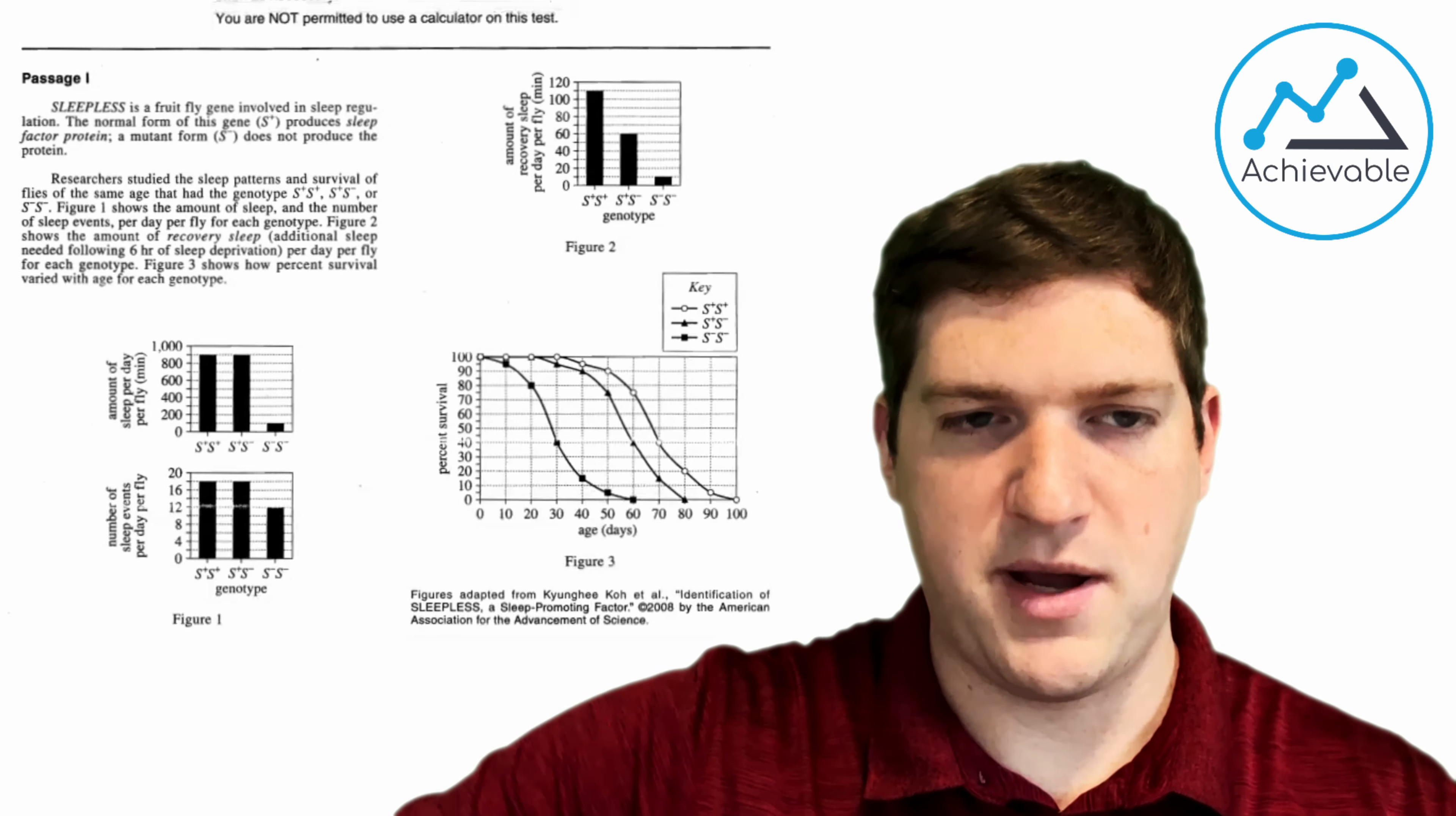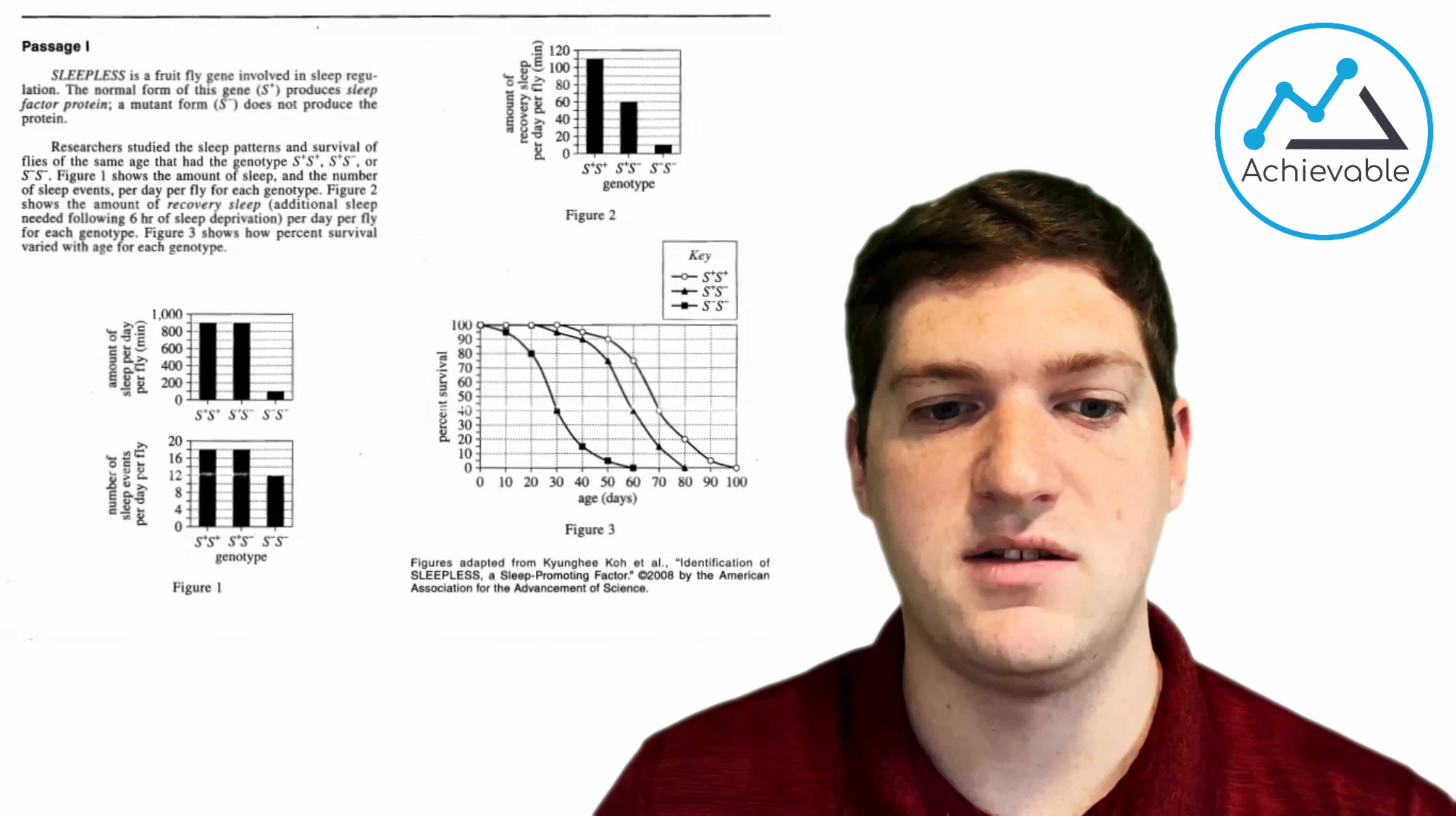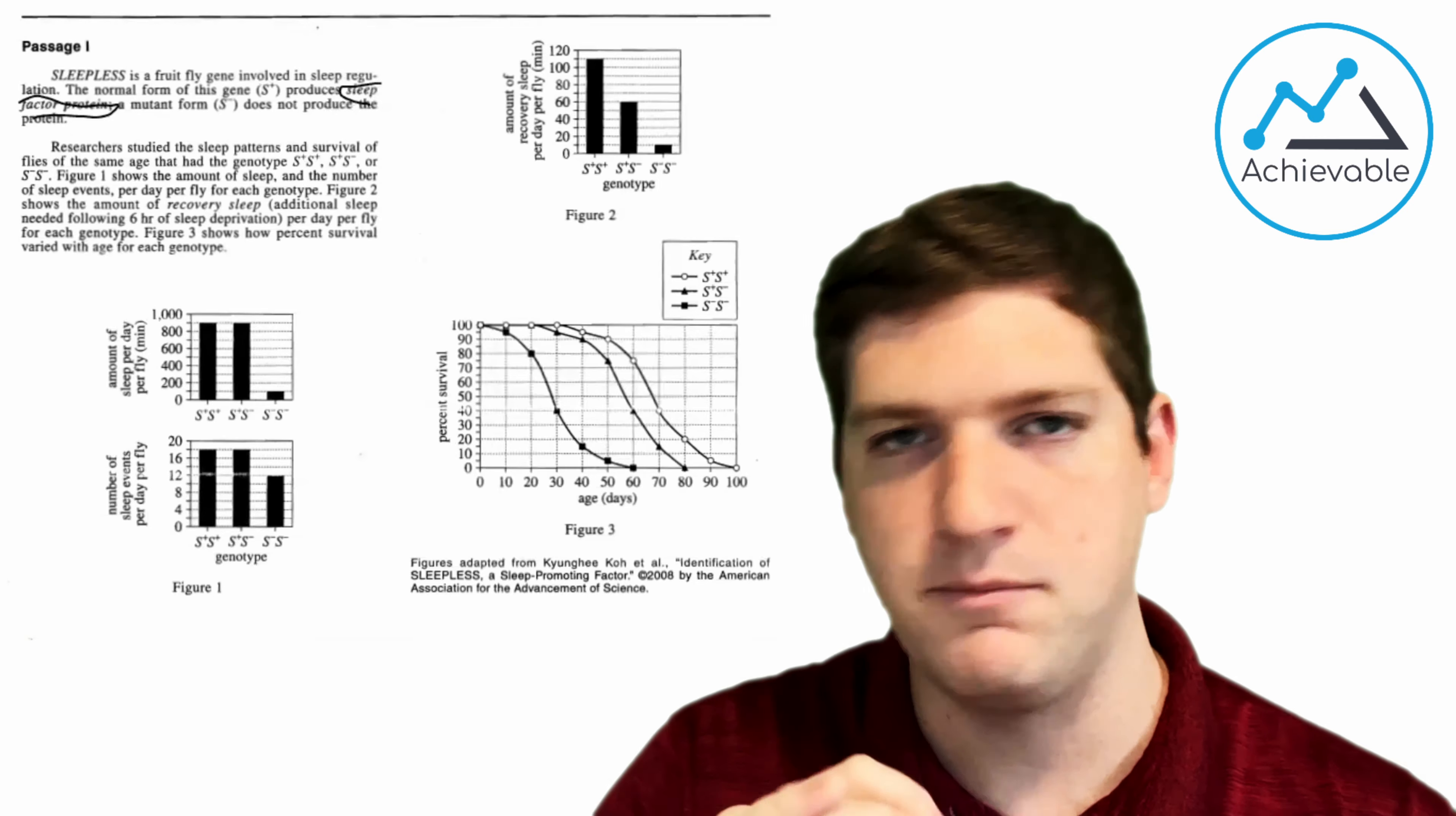To understand how to do this, I just really need to show you. The first passage I have here on this older practice exam is what we call a data representation passage. It's a format of passage. It means that there's going to be lots of figures and graphs and charts. We also don't need to read anything unless we absolutely have to. Most of the time, it's going to be some kind of definition that's not given on the graphs that we may need. For example, here in the first part, I would only read this if a question asked me about it, but I would also box this sleep factor protein here, just so I don't have to refind that if I need to know what this S plus gene stands for. I can just immediately look, know where to find it. Oh yeah, sleep factor protein. We're good to go.